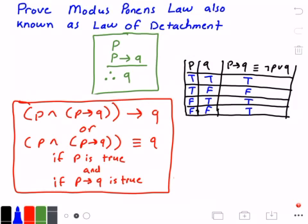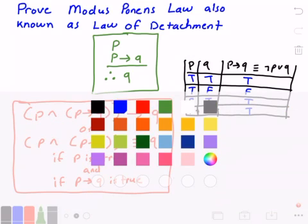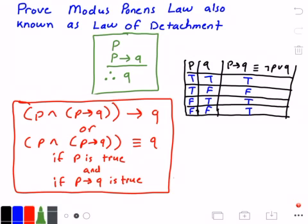And now what that means is, if we look here, we can see that when P is true and P implies Q is true, then Q is true. And so this row here, that very first row, proves the modus ponens law is true.